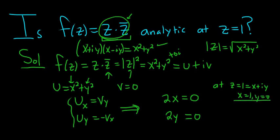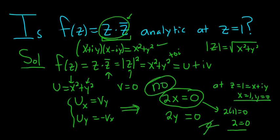So if this were to occur, what would happen here is everything would fall apart. You would get 2 times 1 equals 0. So you would get 2 equals 0. So if the Cauchy-Riemann equations hold, then 2 must be equal to 0, which is impossible. That's a contradiction. So there is no way that this guy can be analytic at z equals 1. That's it.